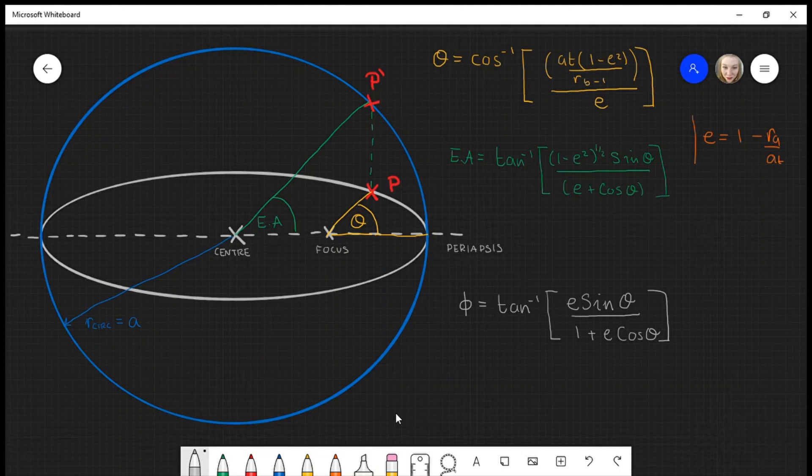The reason why I've included the eccentric anomaly is because you do need to know the eccentric anomaly in order to calculate the time of flight of the transfer. Time of flight is given by this equation.